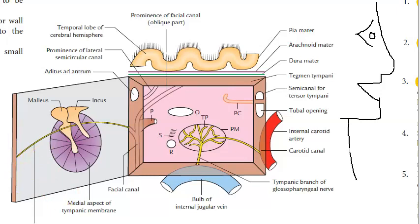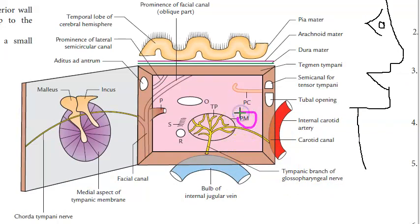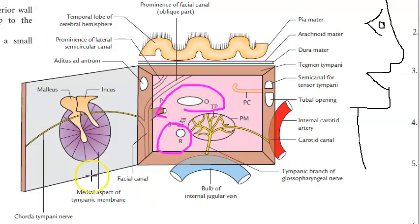Now let us go to the medial wall. You are looking directly at the medial wall — the lateral wall has been opened. There you will see the promontory (PM) — a rounded prominence in the center. Then you have the oval window, also called fenestra vestibuli, and the round window, also called fenestra cochleae.